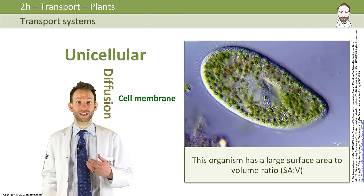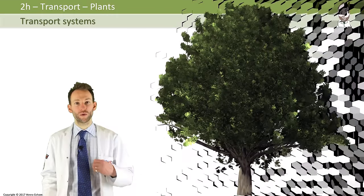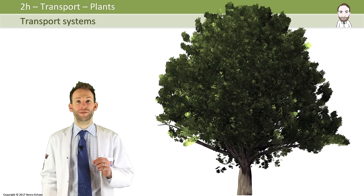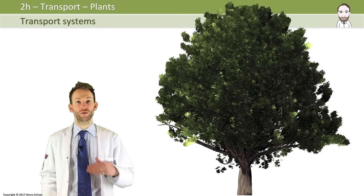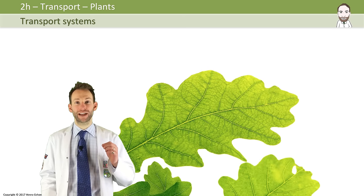Larger multicellular organisms like this oak tree require a transport system to supply all the cells with what they need. In the case of plants, the transport system involves a network of veins or vascular bundles that run between the roots all the way through the plant to the leaves.